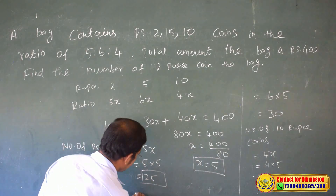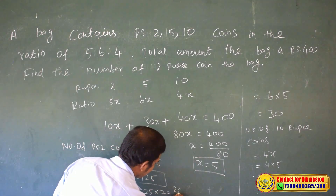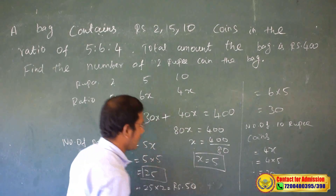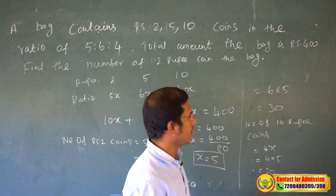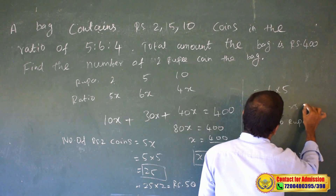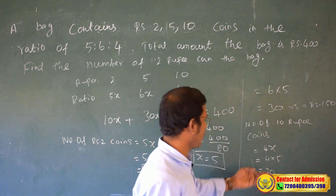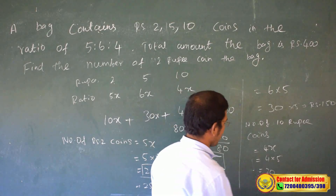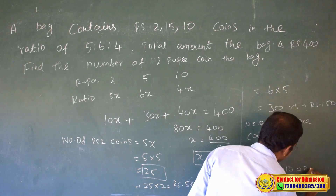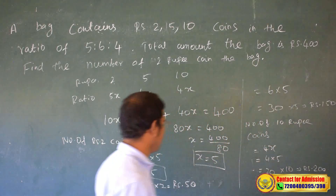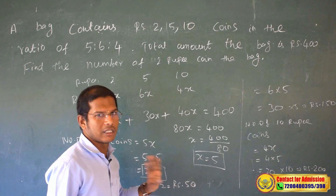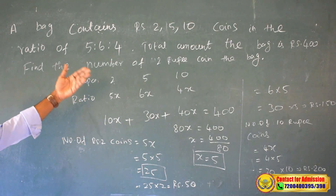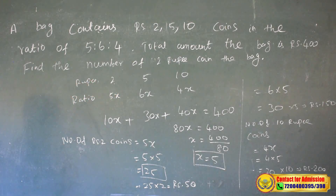So the denomination-wise value is: 25 coins of 2 rupees = 50 rupees, 30 coins of 5 rupees = 150 rupees, 20 coins of 10 rupees = 200 rupees. Total = 50 + 150 + 200 = 400 rupees. This confirms the total amount in the bag is 400 rupees.